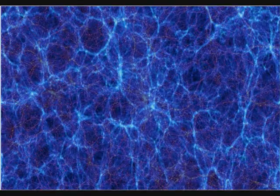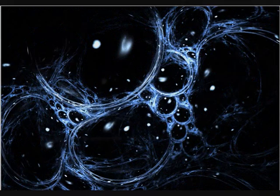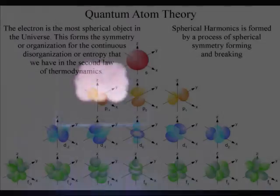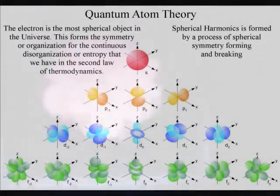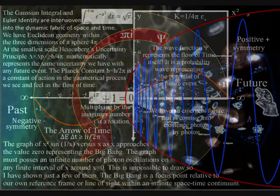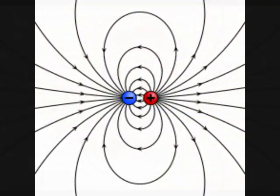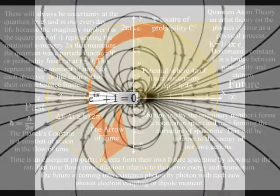On the very large scale, with very little matter in the form of atoms, this process forms negative pressure, pushing the galaxies apart. Because this is a geometrical process, we see the same dynamic geometry throughout the process, from the very small to the cosmological scale. We have the future unfolding photon by photon, with each new photon-electron coupling, or dipole moment. The electron is the most spherical object in the universe, and at the most fundamental level, this is a process of spherical symmetry forming and breaking.